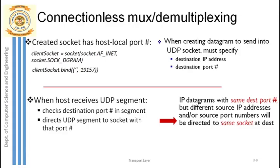Both TCP and UDP perform multiplexing and demultiplexing, but the way they do it differs. TCP is a connection-oriented protocol and UDP is a connectionless protocol. If you have forgotten the concepts of sockets, please go back to the socket programming video from the application layer. We will start with connectionless multiplexing and demultiplexing, which is done by UDP — the User Datagram Protocol running at the transport layer.